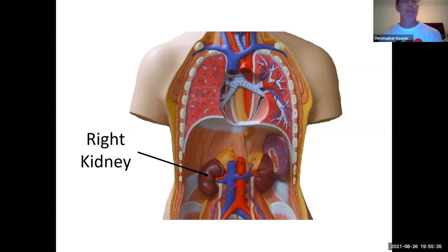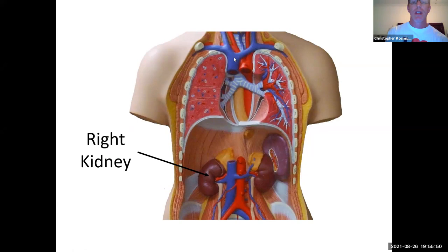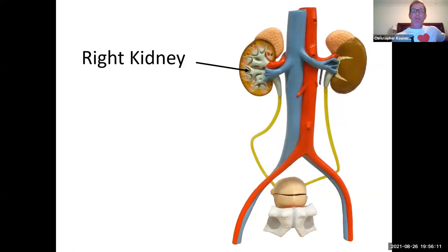Here's our model — we're on the left side of the screen but this is the model's right side, so that is the right kidney. Notice the right kidney is lower than the left kidney, because the liver sits right above the right kidney and pushes it down. Here on this model you can see the right kidney again, with the right ureter draining down into the urinary bladder.